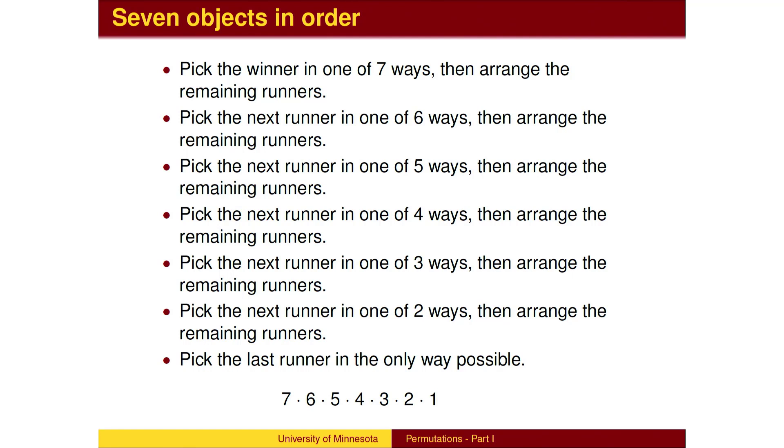The total permutations of seven runners is seven times six times five times four times three times two times one.